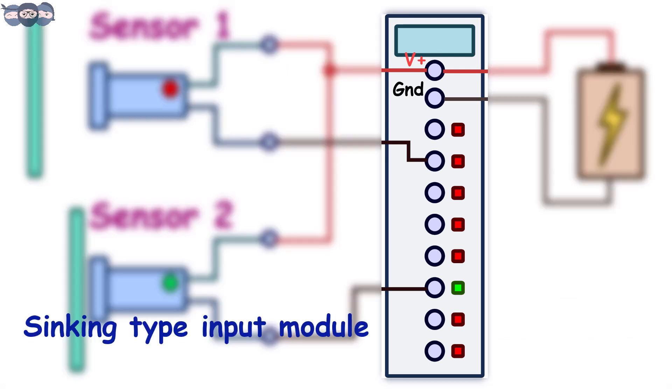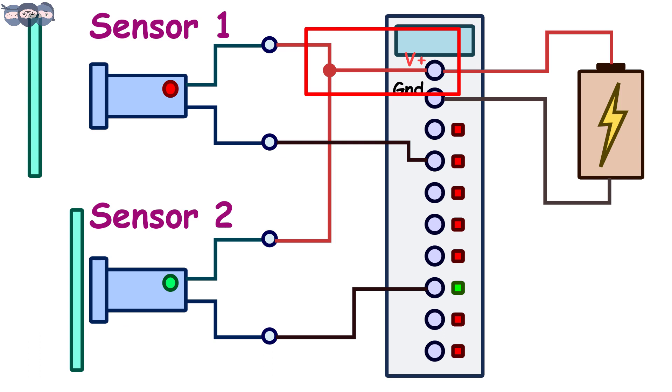In the figure shown, the input module is a sinking type. Here, the V positive of all sensors will be connected to V positive point on the module, and output of different sensors will be connected to the individual points on the input module.